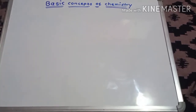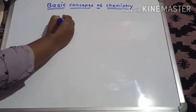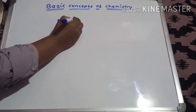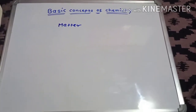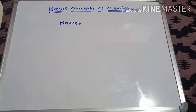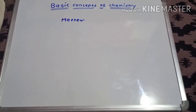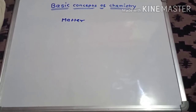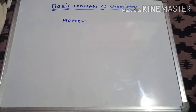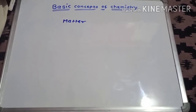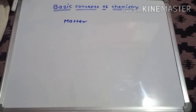In today's lecture we are going to discuss: What is matter? Then secondly, classification of matter. Then further, the types of matter — elements, compounds, and mixture. Elements and compounds are the two most important concepts that should be clarified. So let us start with matter.